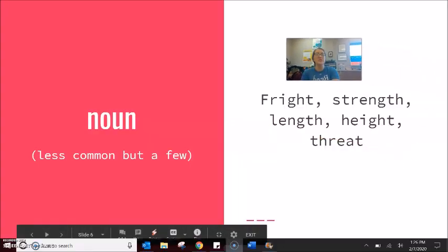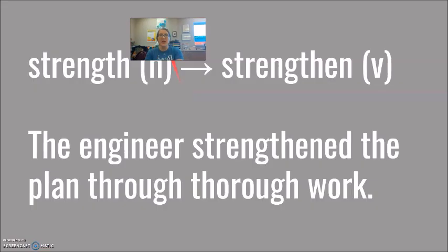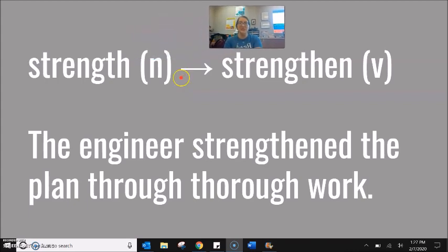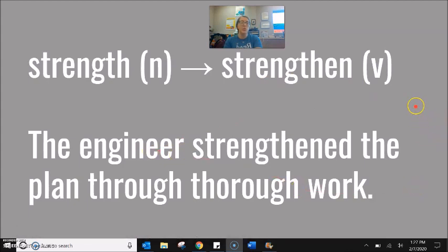We also see this pattern with nouns, though less often. Here is a group of five you have probably seen before: fright → frighten, strength → strengthen, length → lengthen, height → heighten, and threat → threaten. For example, the word strength as the noun, strengthen as the verb: the engineer strengthened the plan through thorough work.